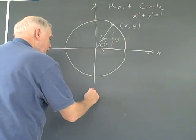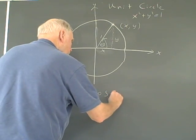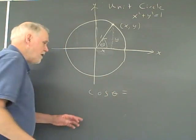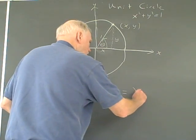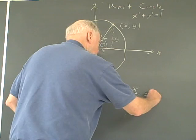So if I take the cosine of theta, cosine of course is adjacent over hypotenuse, is x over 1, which equals x.